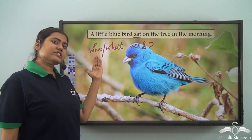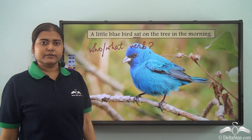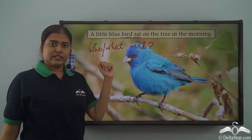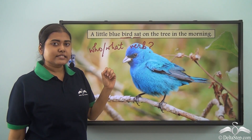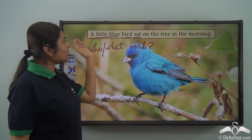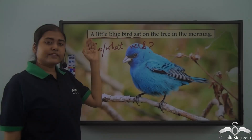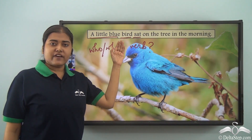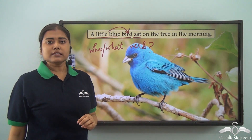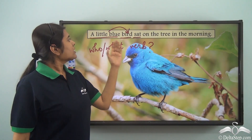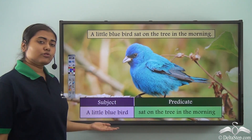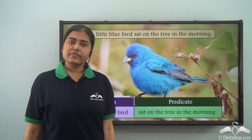If we ask 'what sat,' we do not have an answer. But if we ask 'who sat,' the answer is 'bird.' So 'bird' is the subject. But is bird the only subject? No — before 'bird' we have 'a little blue,' where 'a' is the article and 'little' and 'blue' are adjectives modifying the noun 'bird.' So the entire part 'a little bluebird' forms the subject, and 'sat on the tree in the morning' is the predicate.